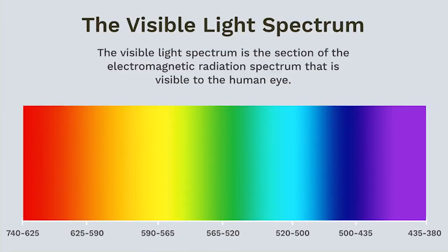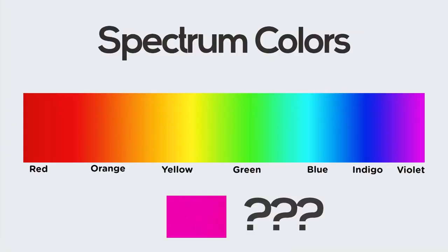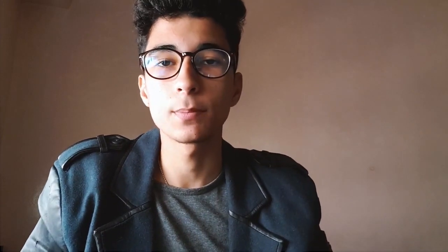What about pink? Pink does not have a wavelength because it's not part of the spectrum colors we know — it simply doesn't exist. And that's why it's not in rainbows. But how do we see pink if it doesn't exist? Well, first we have to ask how our eyes interpret colors in the first place.